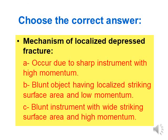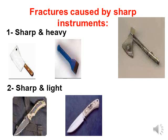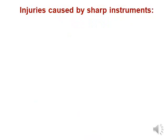Fractures caused by sharp instruments: sharp and light instruments cause a cut fracture with regular edges; sharp and heavy instruments cause a cut comminuted fracture. There is also a chipped fracture, caused by a sharp instrument passing tangentially to the skull, removing the outer table while leaving the inner table intact.